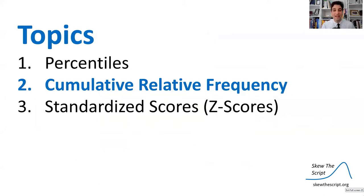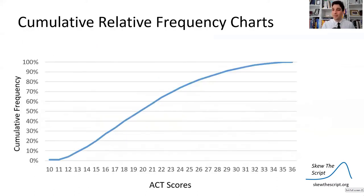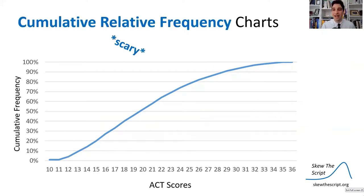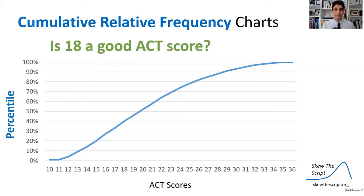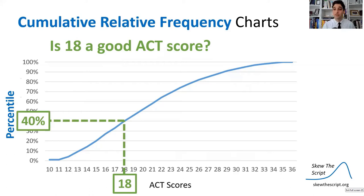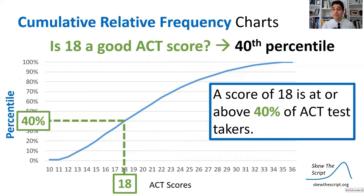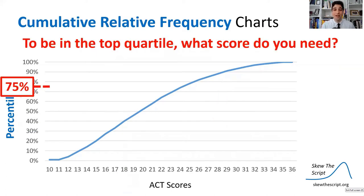Before we get to z-scores and the NBA, let's discuss cumulative relative frequency charts. On the AP exam you might come across these — it's an intimidating name, but cumulative relative frequency is essentially the same thing as percentile. These are just percentile charts. You can relabel the y-axis from 'cumulative relative frequency' to 'percentile.' Here's a percentile chart of ACT scores. Is 18 a good ACT score? We find 18 on the x-axis, draw up to the curve, and read across — it corresponds to the 40th percentile, meaning an ACT score of 18 is at or above 40% of test takers.